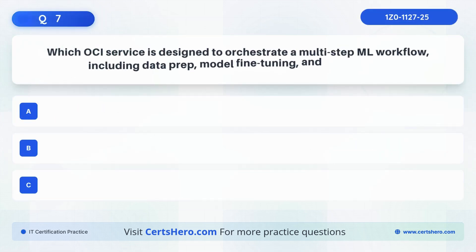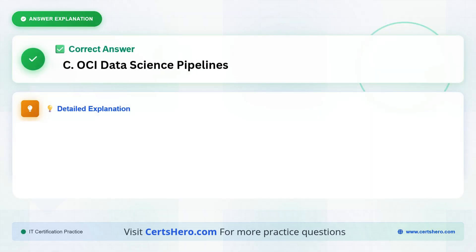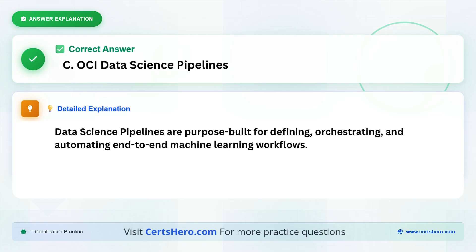Question 7. Which OCI service is designed to orchestrate a multi-step ML workflow, including data prep, model fine-tuning, and evaluation? Is it, OCI functions, OCI data flow, or OCI data science pipelines? The correct answer is C, OCI data science pipelines. Data science pipelines are purpose-built for defining, orchestrating, and automating end-to-end machine learning workflows.